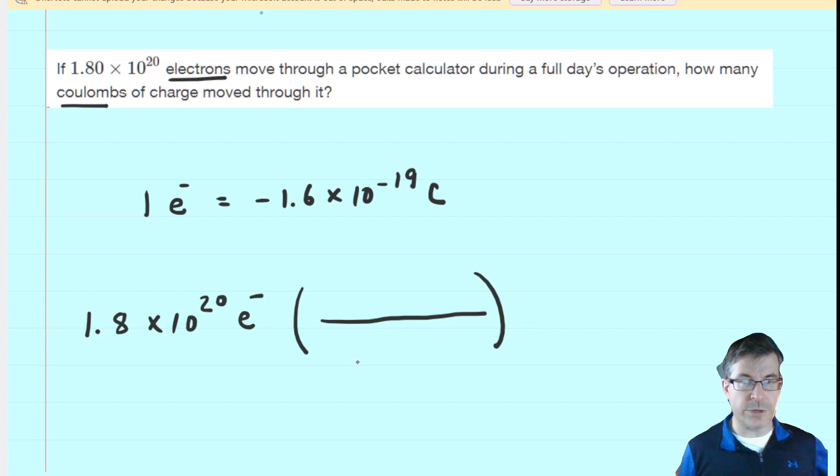We can see from our conversion that 1 electron would be equivalent to negative 1.6 times 10 to the negative 19 coulombs. We have arranged the conversion in this fashion strategically because we want these electrons to cancel. The only way for them to cancel is if we put the electrons of our conversion factor in the denominator.